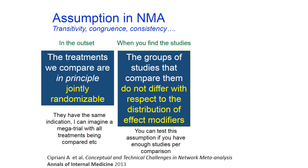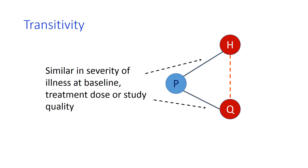The notion of jointly randomizable treatments is linked to the main assumption of transitivity underpinning the validity of indirect comparison. The assumption of transitivity implies that the different treatment comparisons put together in the network do not differ with respect to the distribution of variables that can modify the relative treatment effects. For example, a valid indirect comparison of haloperidol with quetiapine can be obtained if the two sets of studies are similar in severity of illness at baseline, treatment dose, or study quality. Transitivity can be viewed as the extension of clinical and methodological homogeneity across groups of studies that compare different treatments.